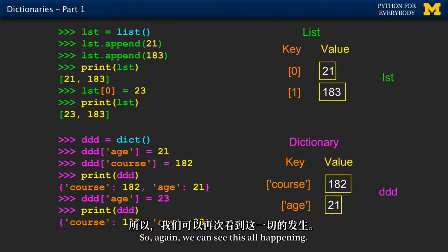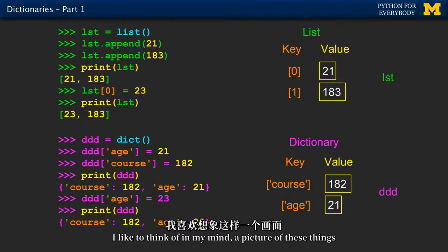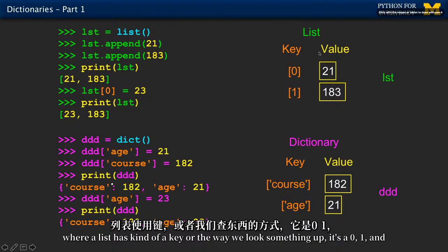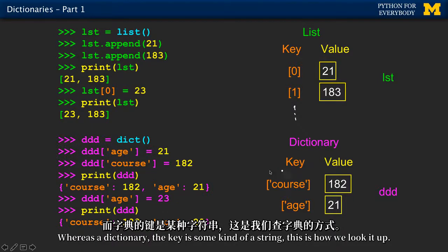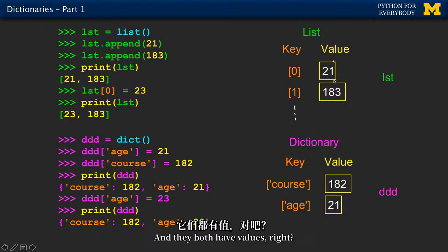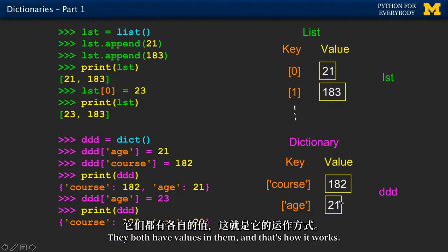So again, we can see this all happening. I like to think of in my mind a picture of these things where a list has kind of a key or the way we look something up. It's zero, one. And if there were more of these, it would be zero, one, and two. Whereas a dictionary, the key is some kind of a string. This is how we look it up. And then they both have values. They both have values in them. And that's how it works.